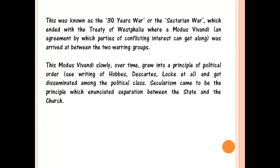In the Treaty of Westphalia there were certain points about how wars based on religion could be avoided and how the supremacy of the church could be ended. These two incidents in history led to the origin of secularism, and the treaty over time grew into a principle of political order. Other writers also wrote on this and ultimately it became an ideology which enunciated the separation between the state and the church. So the origin of secularism in the West was due to the war of supremacy between church and state, plus the common religious war fought for supremacy.